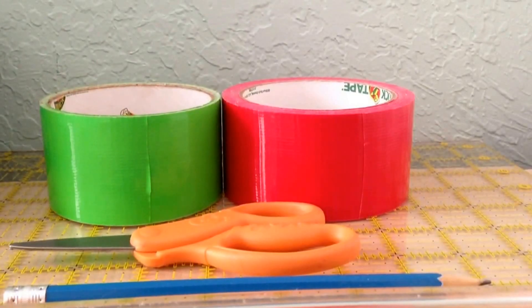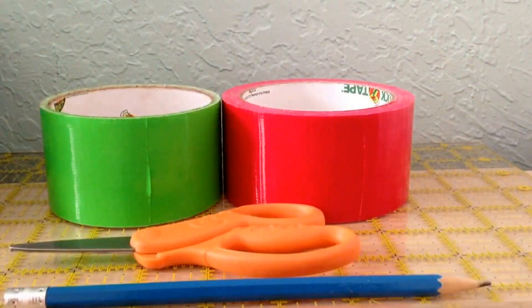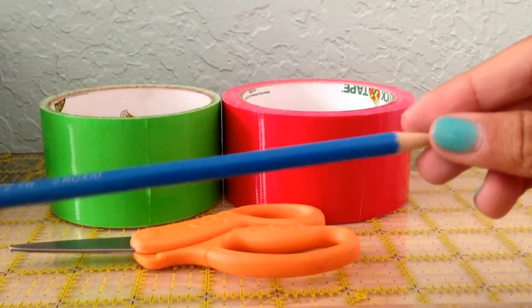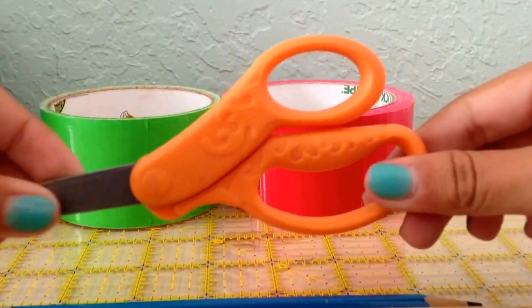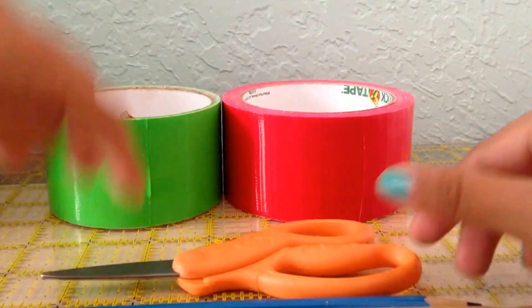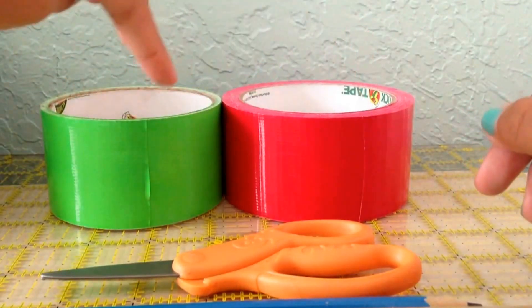The supplies you will need are a ruler, a pencil or a pen to put your rose on, some scissors or an exacto knife, and two different types of duct tape. I will be using red and green.